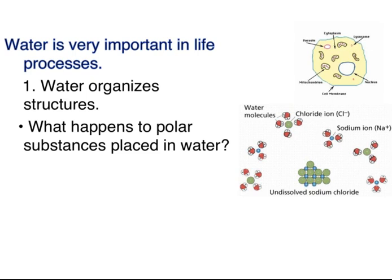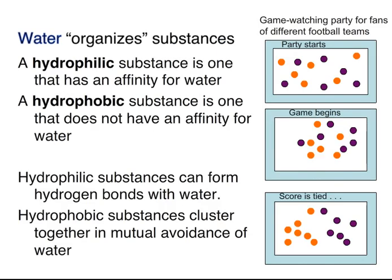Not only does water have unusual physical properties that support life, water is extremely important in life processes in general. Water organizes things. When polar substances diffuse in water, hydrogen bonds form between the polar substance and the water, so shells of water molecules form around the polar molecules. Hydrophilic substances have affinity with water and can form hydrogen bonds with water. Hydrophobic substances are nonpolar, do not have affinity for water, and can cluster together in mutual avoidance of water.